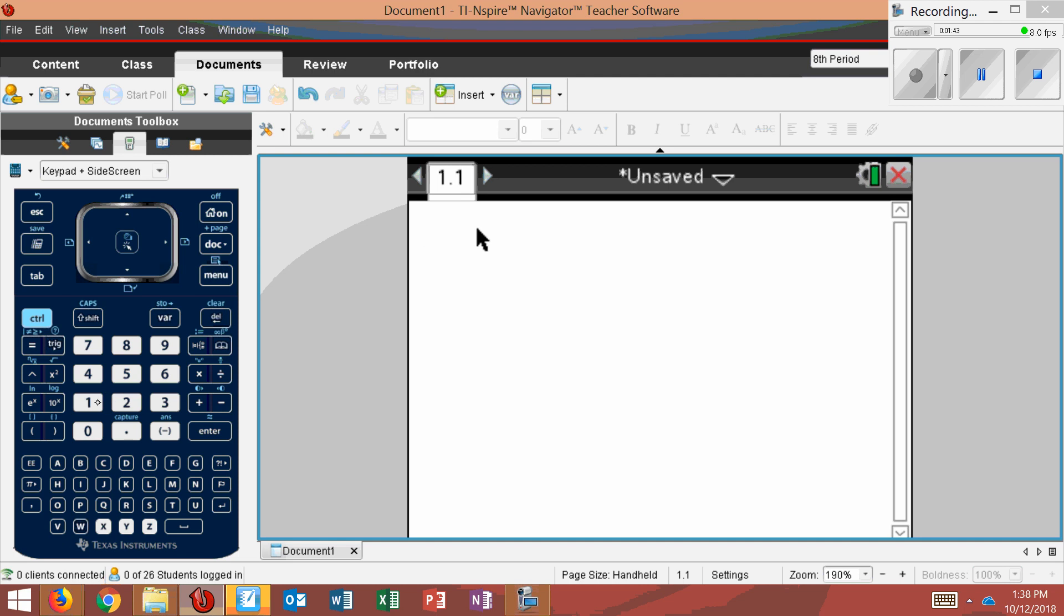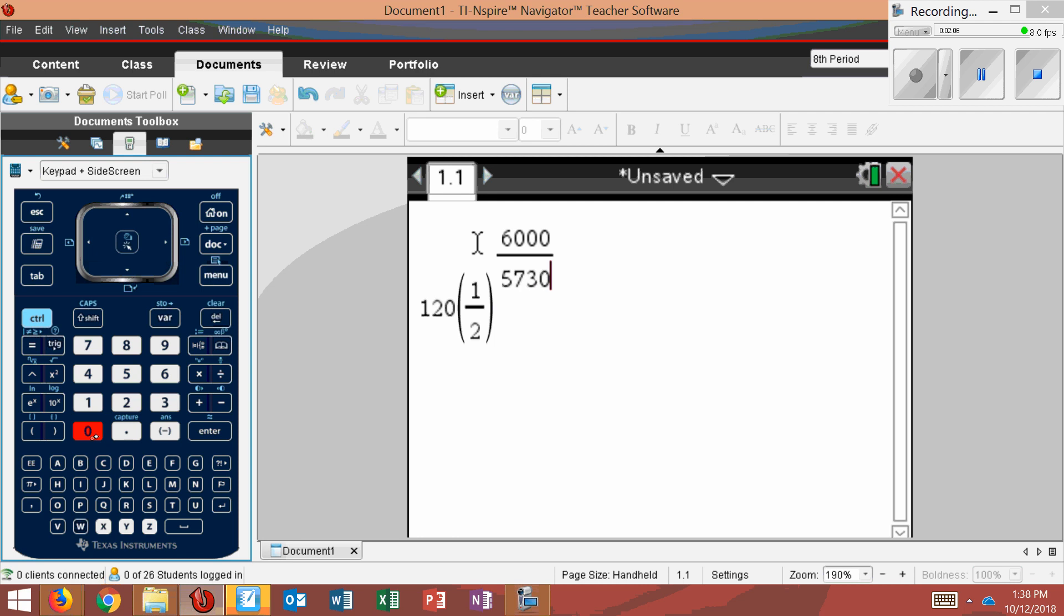I would take my 120 grams, multiply it by that half, but we raise it to the power of T, which is X, divided by 5,730. The X in this problem is 6,000. Whoops, where did my 6 go? There we go. Down here, I have 5,730. There it is.